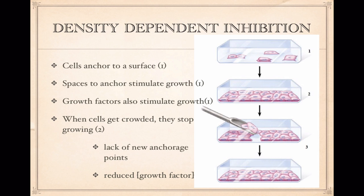Why do cells stop growing when they completely cover the bottom of this little dish? If you put some cells in here and there's plenty of space between them, what will happen is these cells will proliferate until they form a single layer over the bottom of the container, and then they will stop growing. And if you scoop some of the cells out, then they will grow around the borders to fill in the hole, but then they'll stop growing again.